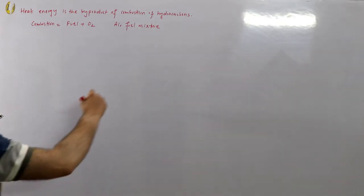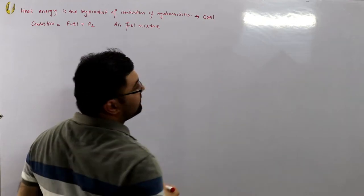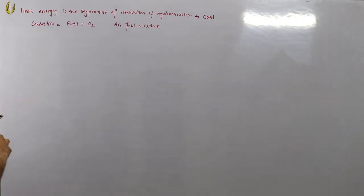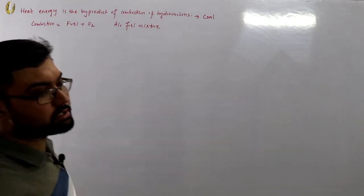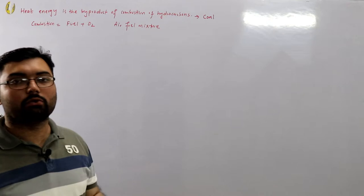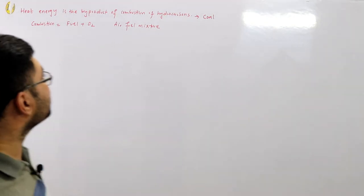The main fuel used here is coal, which is a cheap source of hydrocarbons. For the air-fuel mixture, you need to calculate how much oxygen is required for how much coal. Oxygen comes from the air drawn in by a forced draft fan, which pulls air inwards into the system.